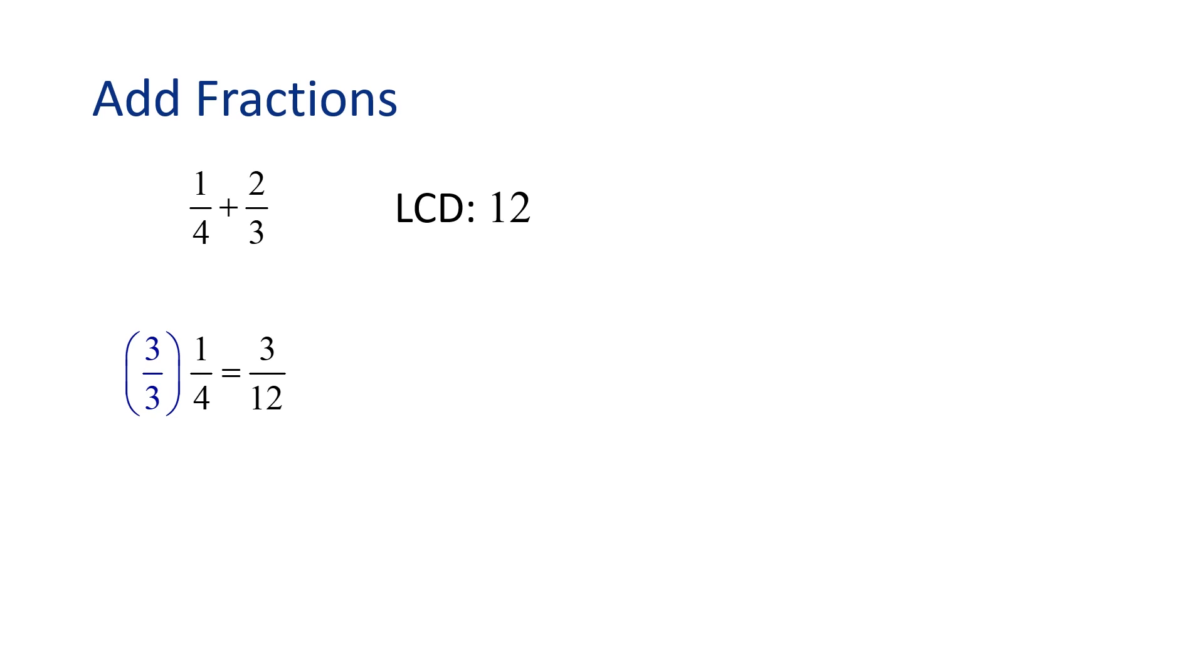Okay, let's do the same for 2 thirds. What do we multiply 3 by to get 12? That's right, 4. So we will multiply 4 over 4 times 2 thirds. And when we multiply straight across, we get 4 times 2 equals 8, and 4 times 3 is 12. We can see that 2 thirds is equivalent to 8 twelfths.